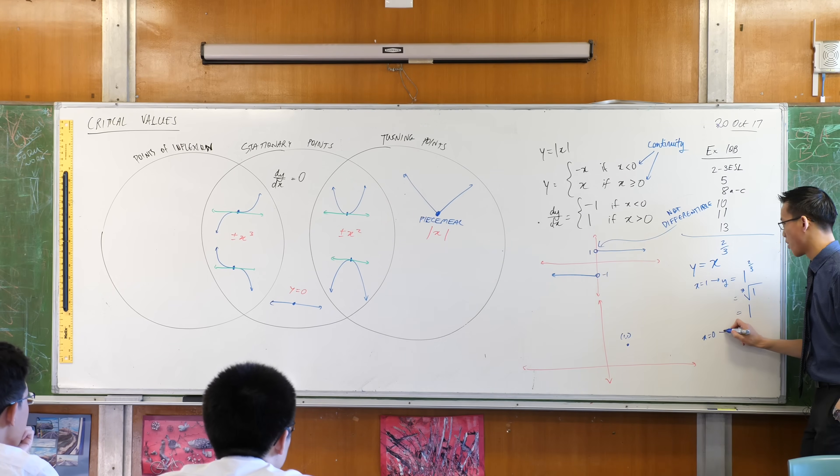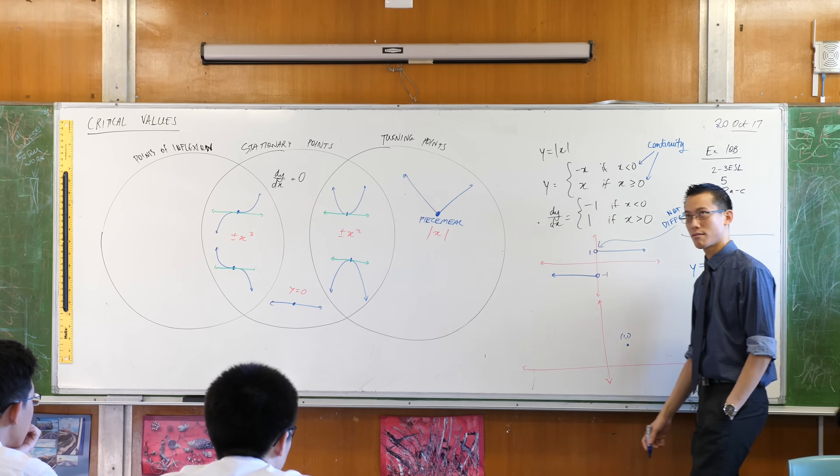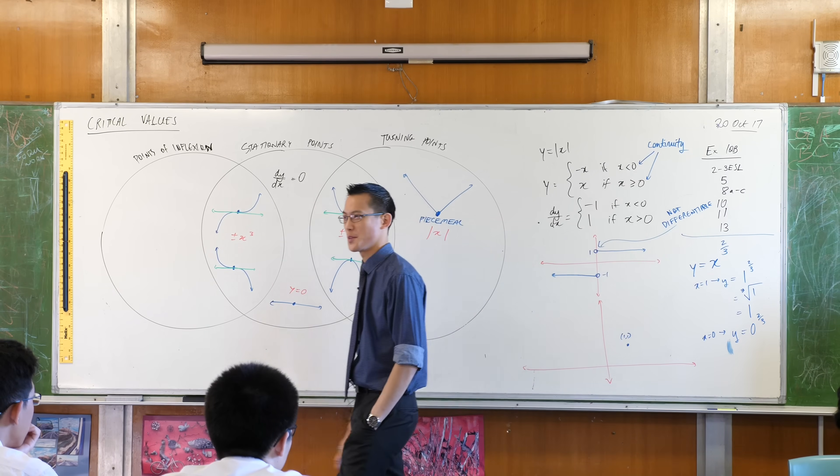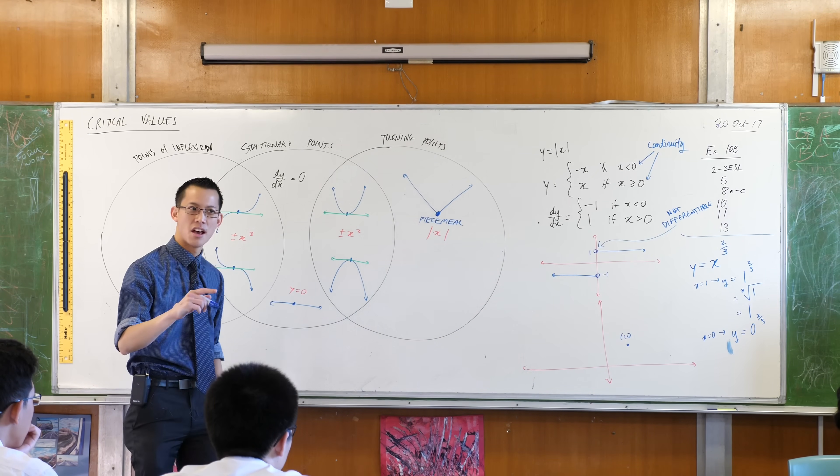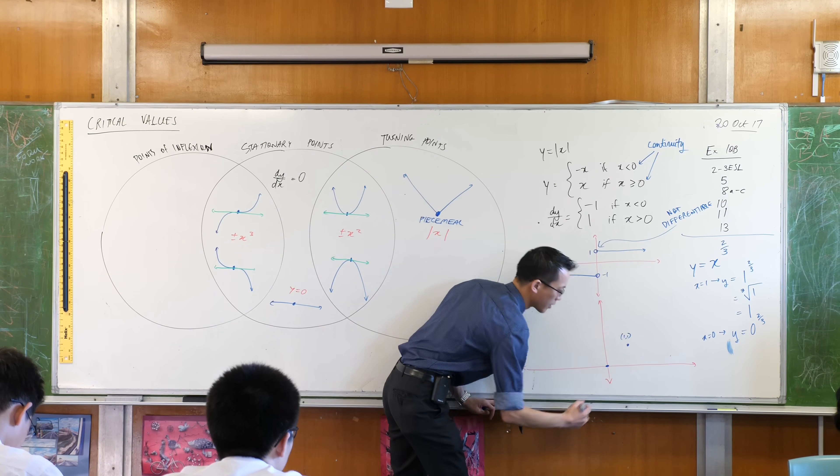If x equals 0, then y equals 0 to the power of two-thirds. Cube root of 0 squared. Come on, you guys can tell me what that is. That's zero. Okay, so this goes to the origin.